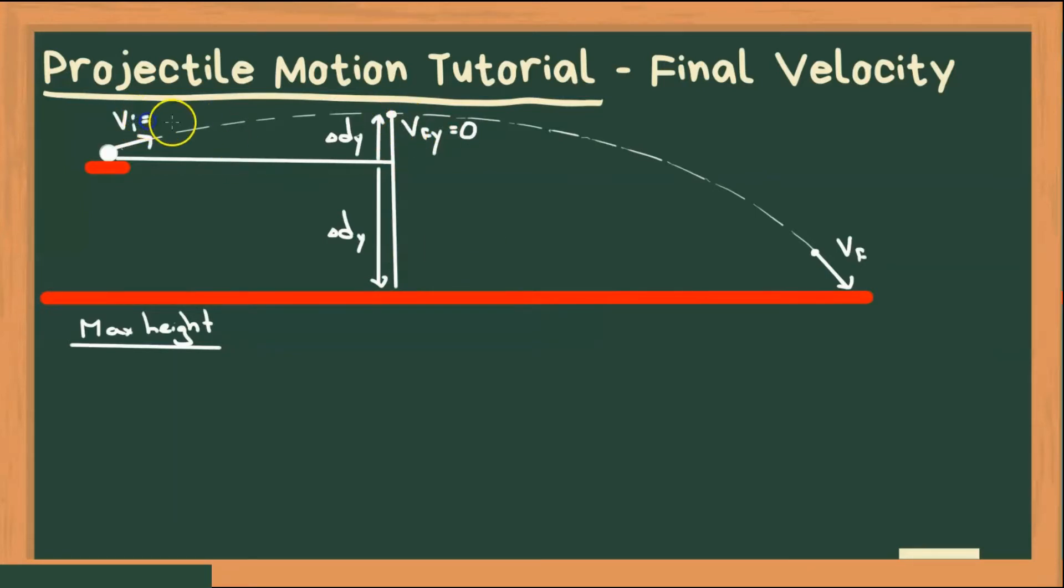Let's say initial velocity is 15 meters per second. We can use an angle theta, which we will say is 10 degrees. And let's say we're starting from an initial height of 30 meters. With that, let's find maximum height.